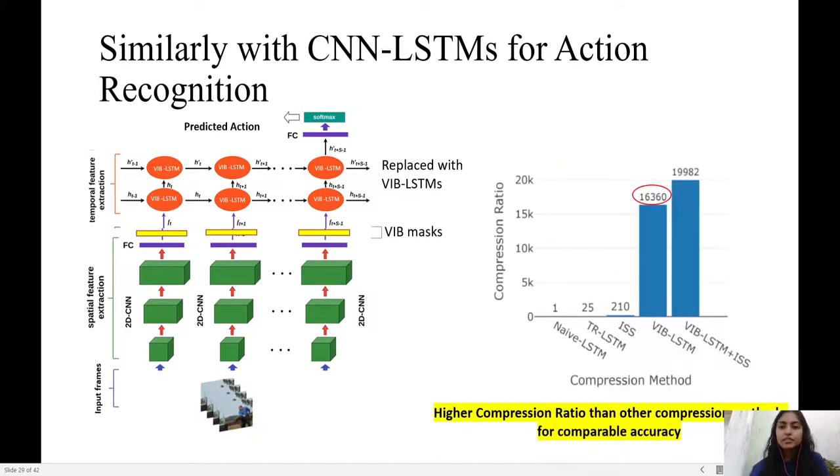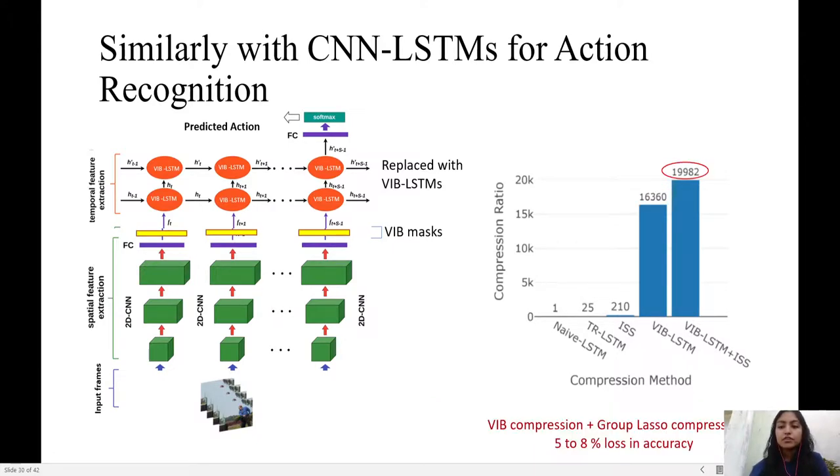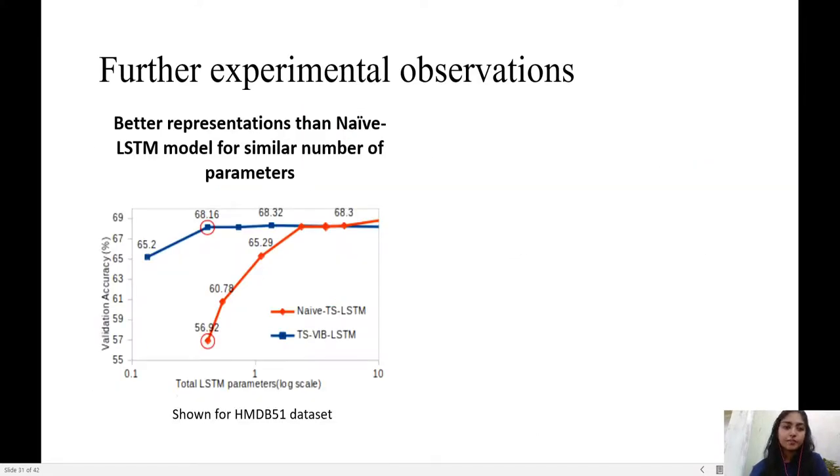Our method leads to the highest compression ratio among all for CNN architectures. Combining our method with group lasso or compression technique leads to even higher compression ratio but at the cost of lower accuracy. We also note that for same LSTM parameters, VIB LSTM-based architectures give higher accuracy than naive LSTM architectures.